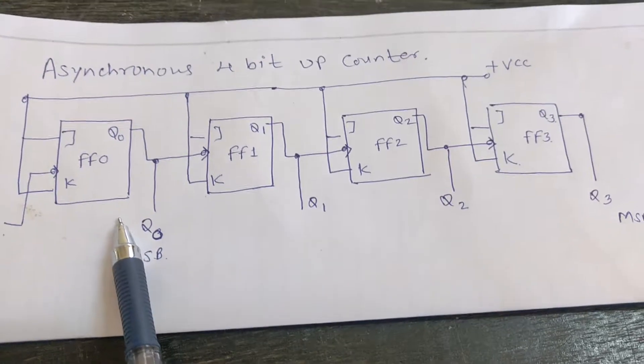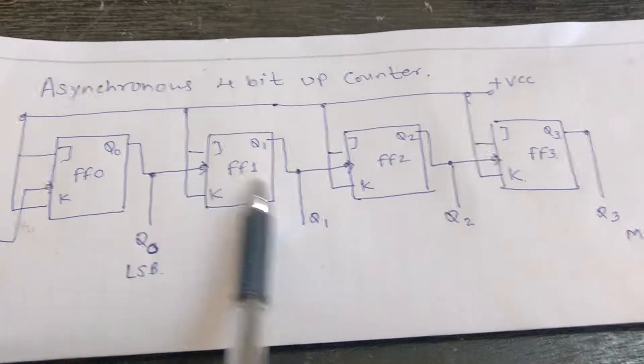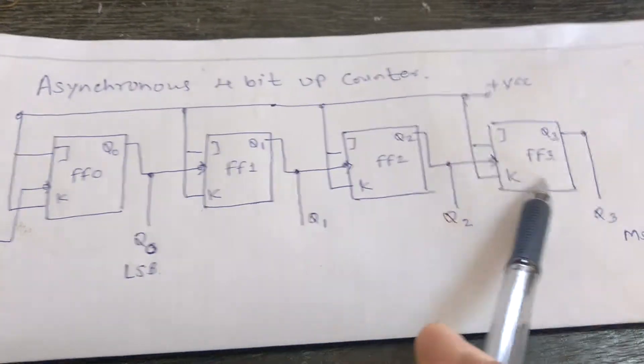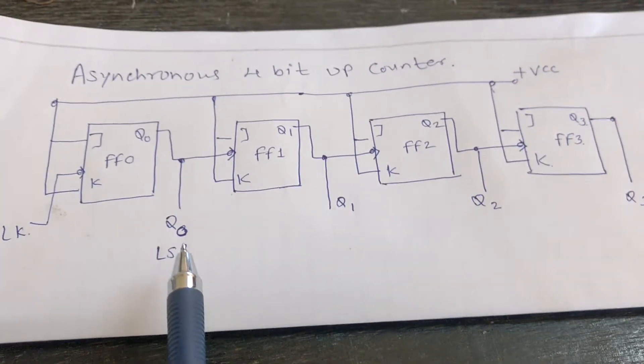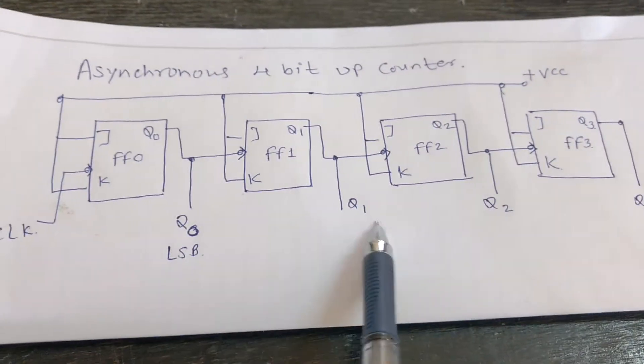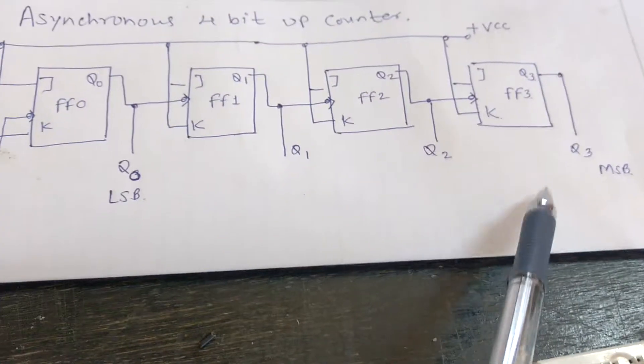This is the circuit of an Asynchronous 4-bit counter. Four flip-flops are connected in series and their outputs are Q0, Q1, Q2, and Q3.